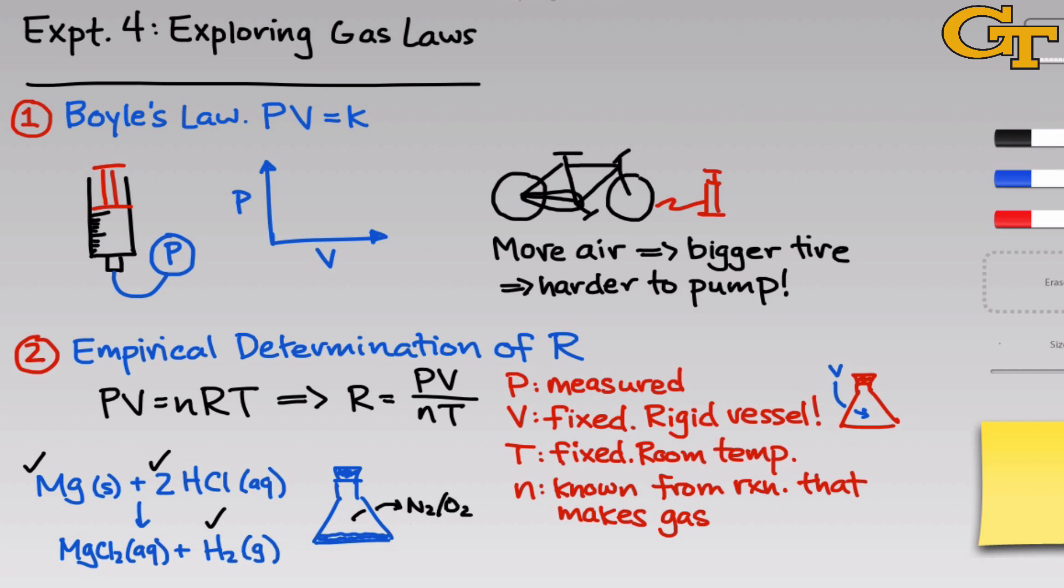First of all, there's the air that we started with, and you'll have the pressure gauge in the system initially, and it's important to record that initial pressure because that's the pressure due to air. That partial pressure is not going to change when we run the reaction, but it's still important to subtract that out from the final pressure we measure.